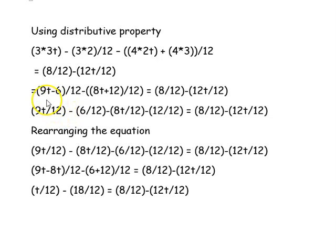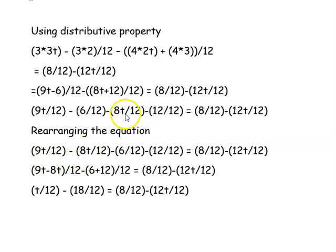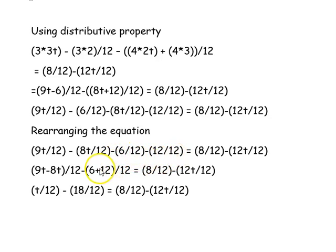Now we simplify. On the left-hand side: (9t minus 6) over 12, minus (8t plus 12) over 12. We then rearrange: (9t minus 8t) over 12, and taking out the negative sign from the second bracket the minus becomes plus, so we have minus (6 plus 12) over 12. The right-hand side remains 8 over 12 minus 12t over 12.